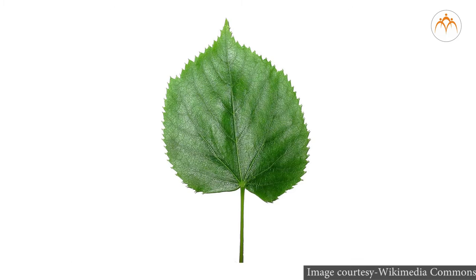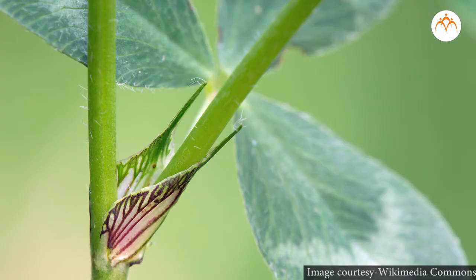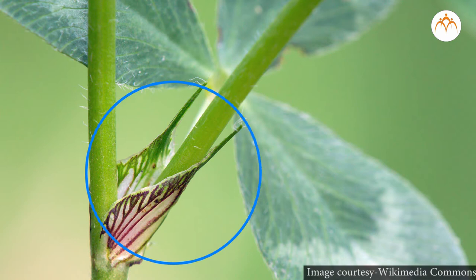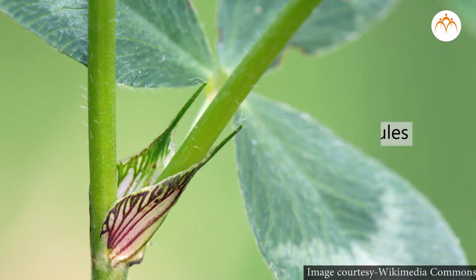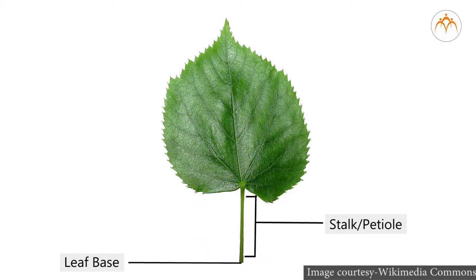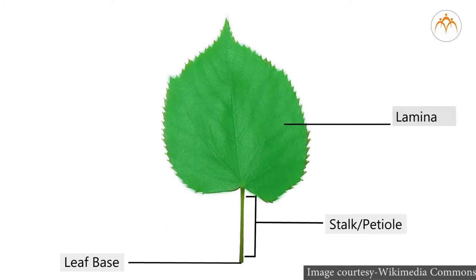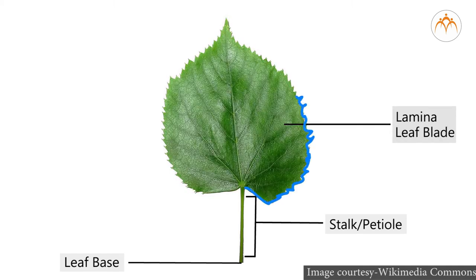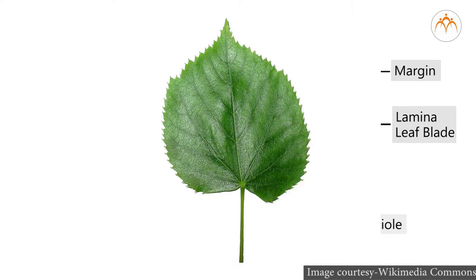To know more about the leaf, let's observe a specimen. This is a hibiscus leaf. It has a stalk or petiole — some leaves do not have a petiole. The point or position where the leaf is attached to the stem is the leaf base. You can see two small green leaf-like structures at the base — these are called stipules, which may or may not be present. The petiole connects to the lamina, which is the flat green expanded part of the leaf, also called the leaf blade. The edge of the lamina is called the margin, and the tip of the leaf is called the apex.